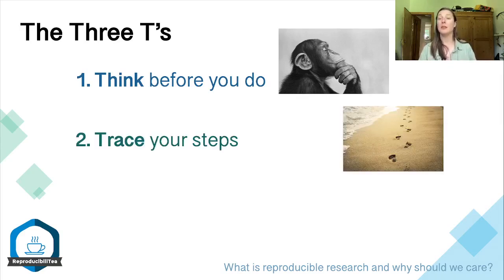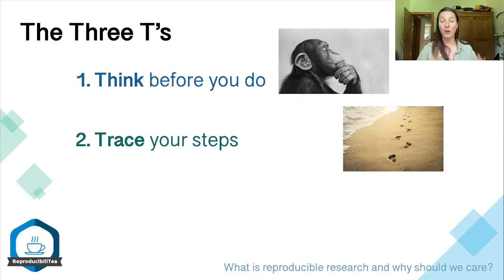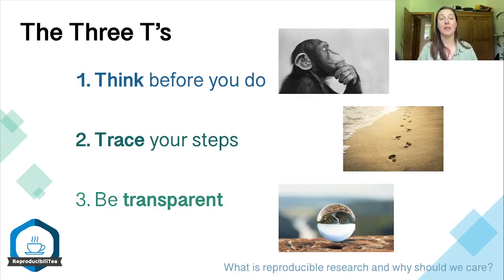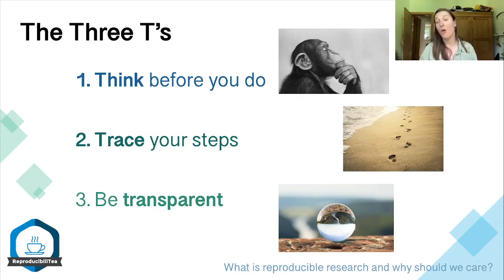The second pillar is to trace your steps. The reasoning behind any decisions you made needs to be clear and obvious, so other people can follow that logic and replicate and reproduce your results. The third, and by far the most important, is to be transparent. You need to be clear about what you did, how you did it, and the results you obtained. If you distort or manipulate this in any way, your results can no longer be considered reliable or valid.